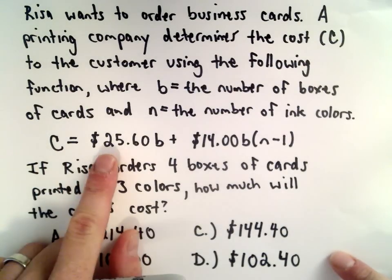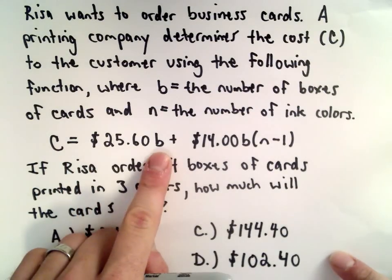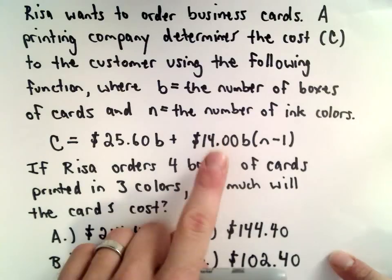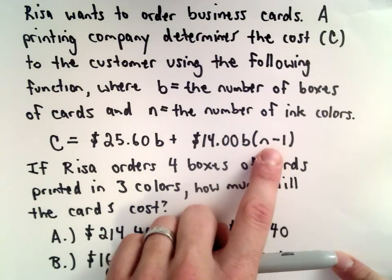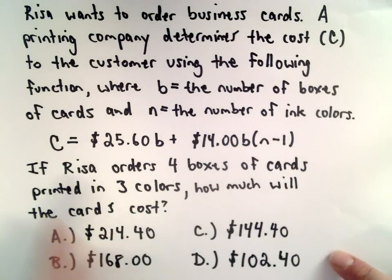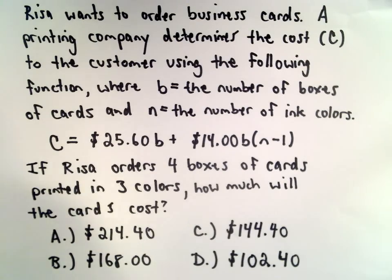So the cost C equals 25.60 multiplied by B, the number of boxes, plus $14 multiplied by B, multiplied by the quantity N-1. Risa wants to order four boxes of cards printed in three colors. We want to know how much the cards will cost.